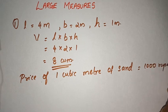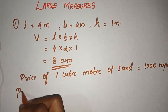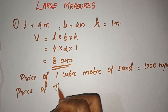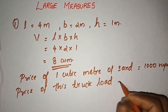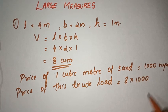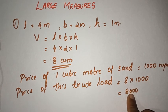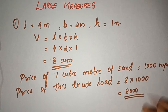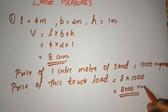The price of 1 cubic meter of sand is 1000 rupees. So the price of 8 cubic meters is 8000 rupees. That is the price of this truck load.